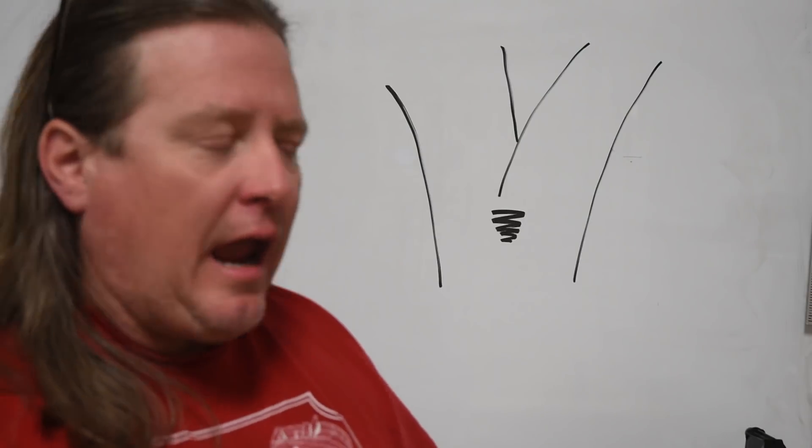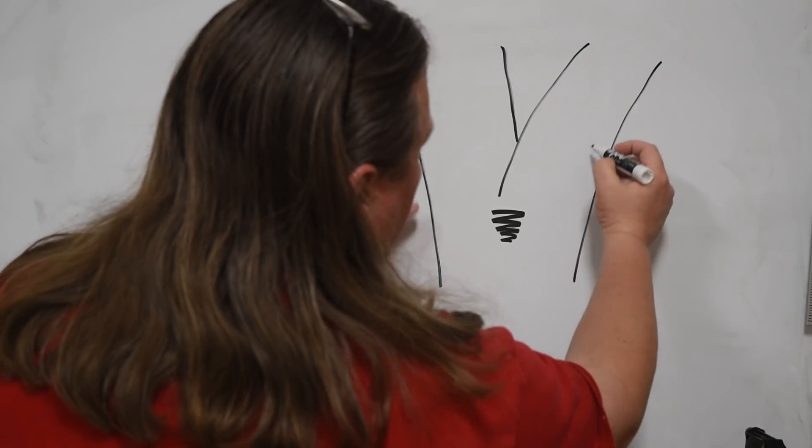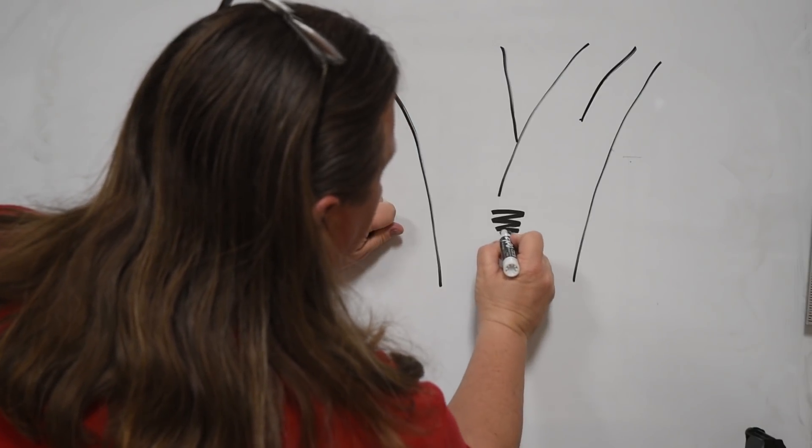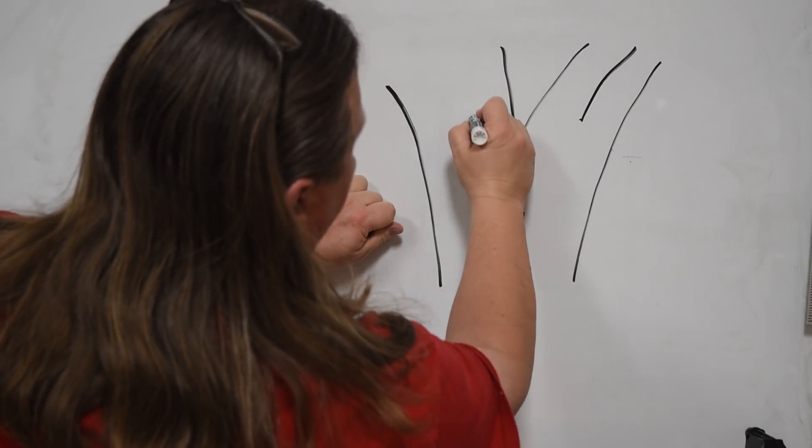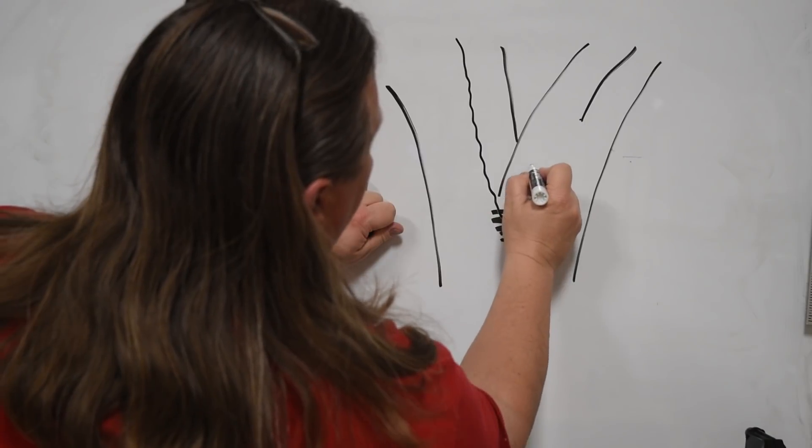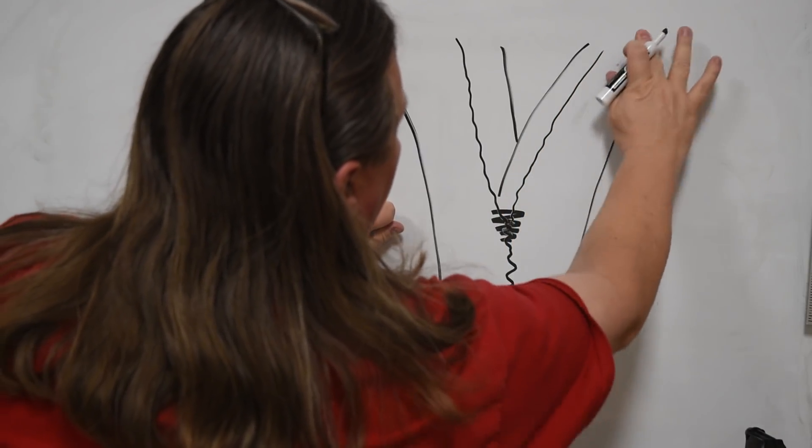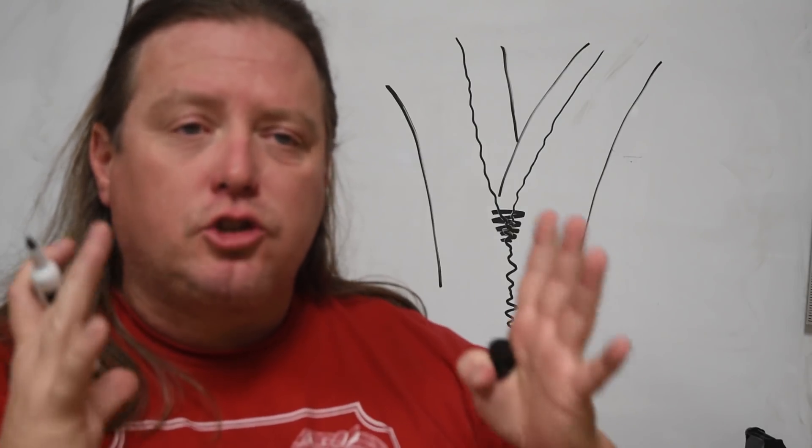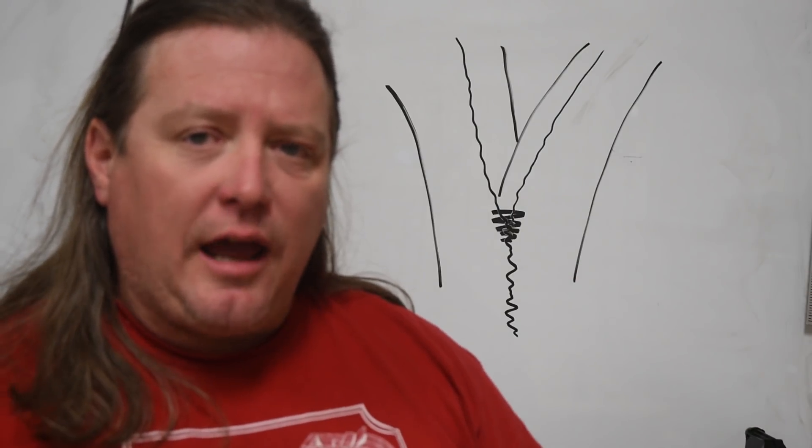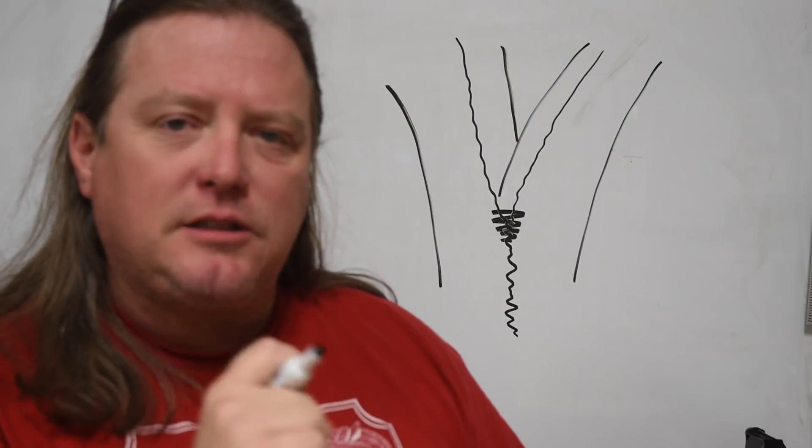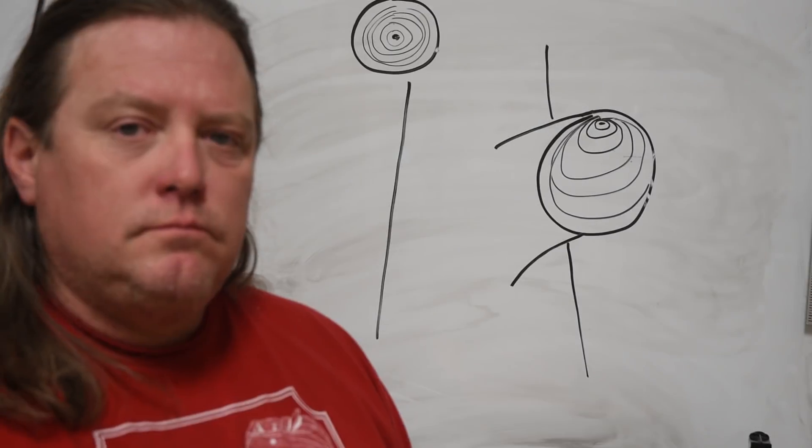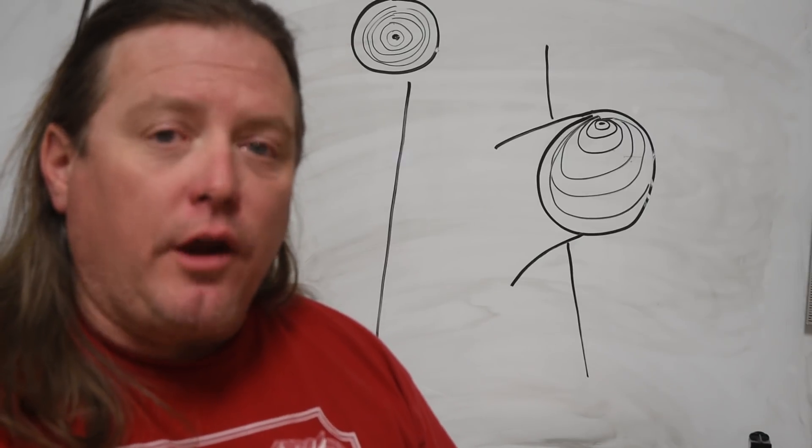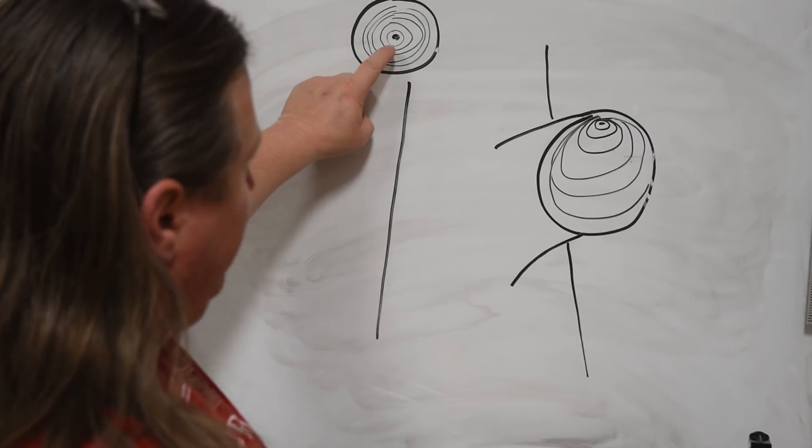Some people call it the crotch of the tree. Others call it the flame of the tree because working this area of a tree produces a very beautiful piece of wood. But there's a lot of stress in there. Makes it very, very hard. And that stress progresses up through the branches because you have the pith of the tree running up the center.